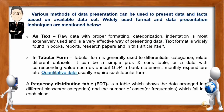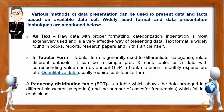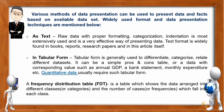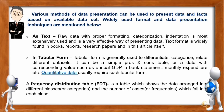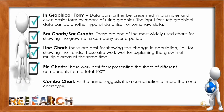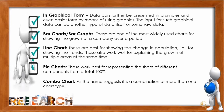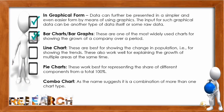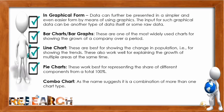Various methods of data presentation can be used to present data and facts based on an available data set. Widely used formats include: as text — raw data with proper formatting, categorization, and indentation. For tabular form, it is generally used to differentiate categories and relate different data sets. For frequency distribution table (FDT), it is a table showing data arranged into different classes or categories and the number of cases or frequency which fall into each class. For graphic form, data can be presented in a simpler and easier form using graphics — including bar charts for showing growth, line charts for showing change of population, pie charts for representing shares of different components, and combo charts as a combination of more than one chart type.